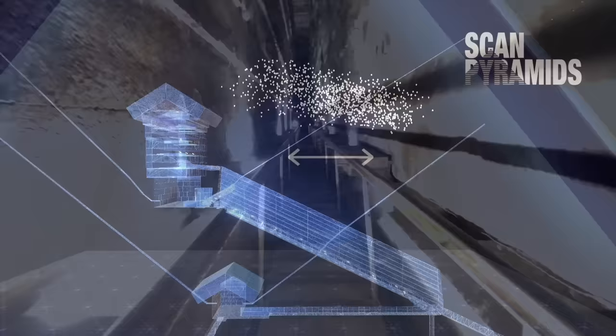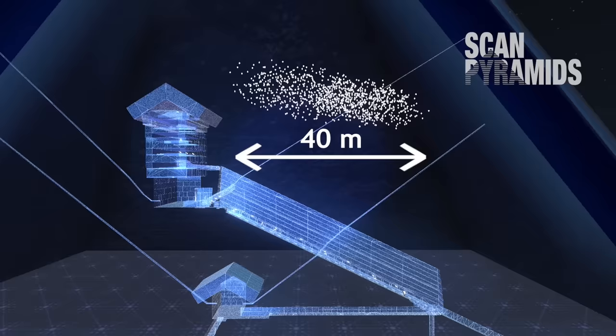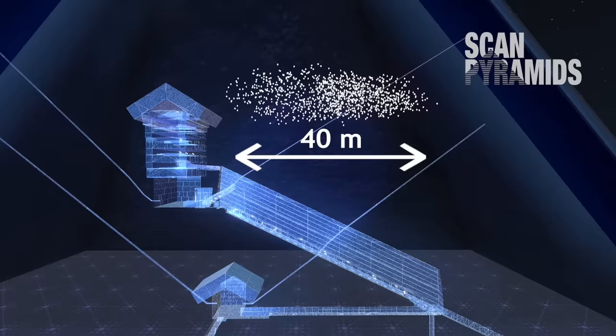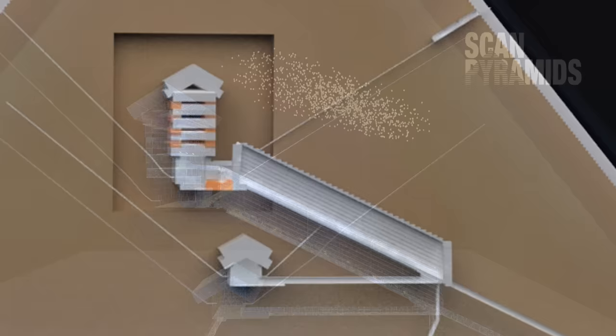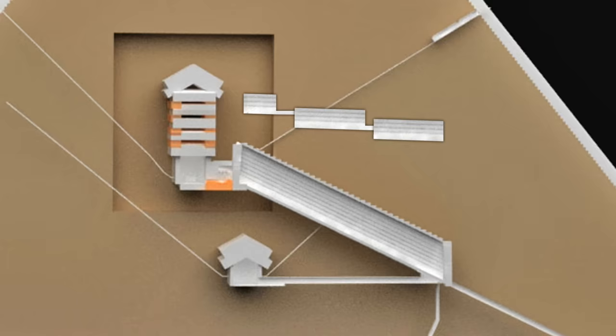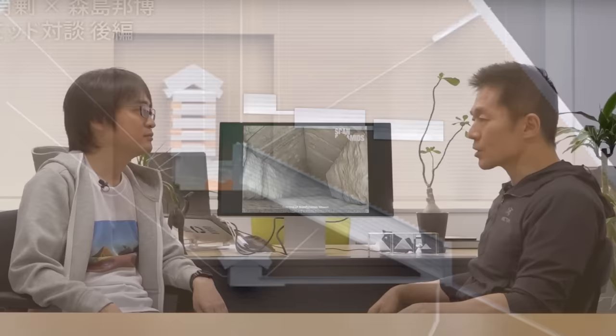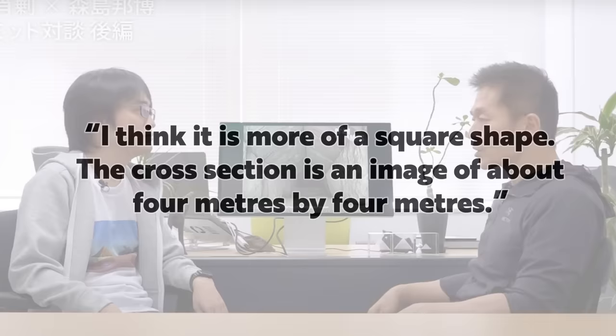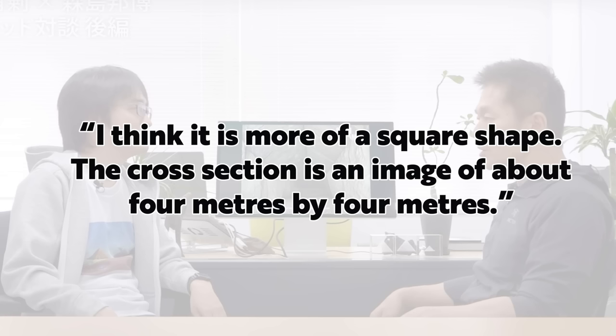Using the most recent data, the void is at least 40 meters long, but apparently the data shows the void has a somewhat square cross section, being approximately 4 meters wide and 4 meters tall. For reference, the grand gallery is 8.6 meters tall and 2.06 meters in width. These new measurements are not published in any paper and it is still a work in progress, but talking to Yukinori Kawae, Morishima said, quote, I think it's more of a square shape. The cross section is an image of about 4 meters by 4 meters. End quote.